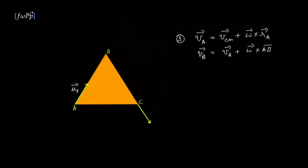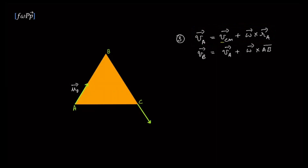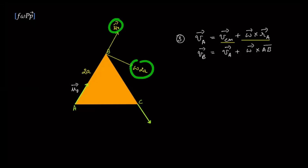This third approach is not entirely new, but it is the most general. We assume a velocity for the center of mass with x and y components, and an unknown ω. Using the equation v_B = v_A + ω × AB, it's easier to see this graphically. The velocity of B should equal the velocity of A plus a rotation term. If it rotates about point A, that gives a rotational velocity perpendicular to AB, of magnitude ω × 2a. The sum of these two velocities is the final velocity of vertex B.